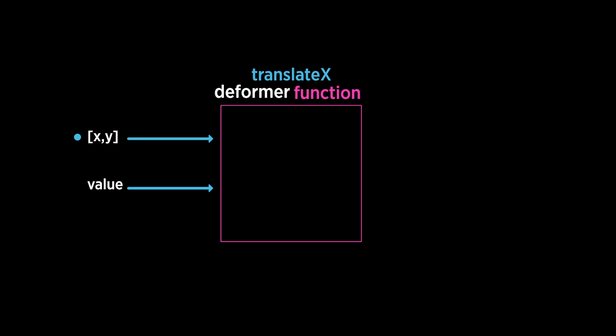For example, the translateX deformer might accept a coordinate 2, 2, and for the second input would provide a value of, say, 5. Inside this translateX function, the math it will do is quite simple. It adds 5 to the x coordinate, which updates it to 7, 2,